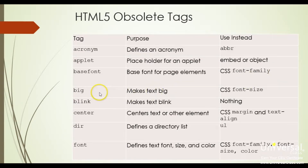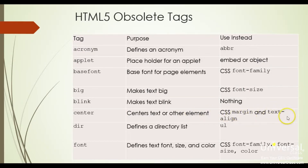We had big, which made text bigger — now we should use CSS font-size. We had blink, which caused text on the page to blink — now we should not use anything for blinking. Another one called marquee should not be used either. We had center, which centers text or other elements — now we should use CSS text-align. We had dir, which defined a directory list — now we should use an unordered list. And we had the font tag, which defined font size, face, and color — now we should use CSS font-family, font-size, and color.